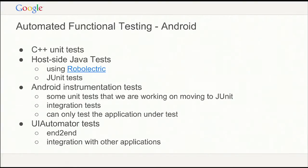This is a good point to talk about what kind of automated functional testing we do. For Android, we share a lot of code with Chrome desktop written in C++, so we run a lot of the same C++ unit tests across Android, Mac, Windows, Linux, and Chrome OS. There are also integration tests — we have something called browser tests that run more integration tests in C++. We recently introduced Robolectric to do host-side Java unit tests that run on the desktop.